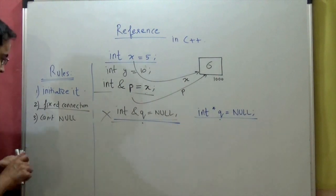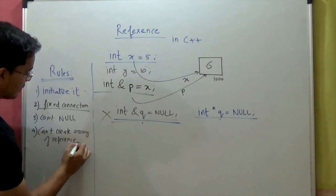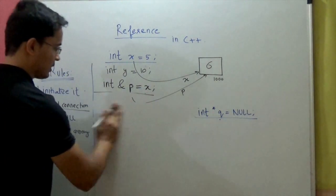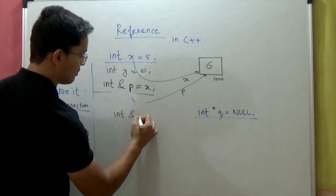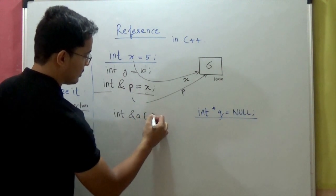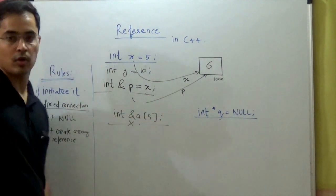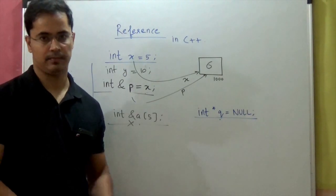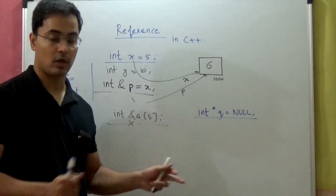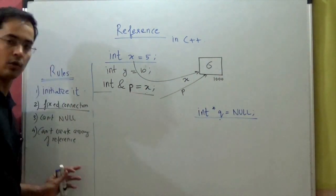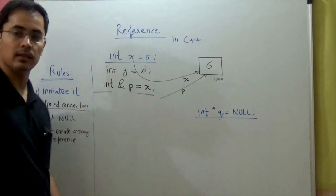The next rule is: you cannot create an array of references. Something like int ampersand a with array brackets is not allowed. You can create an array of pointers, but not an array of references. So these are the rules you have to follow while using references in C++.